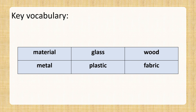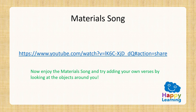Let's review the key vocabulary: material, glass, wood, metal, plastic, fabric. Now you can go back to the previous slide and do your activity. Once you are done, you can move to the next part, which is the material song. Enjoy this song and try creating your own verses by looking at the objects around you.